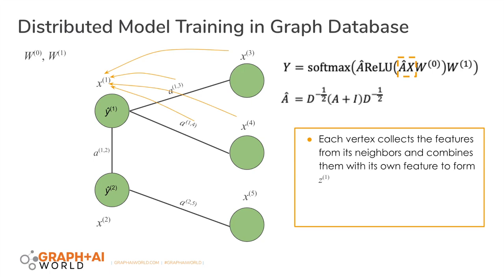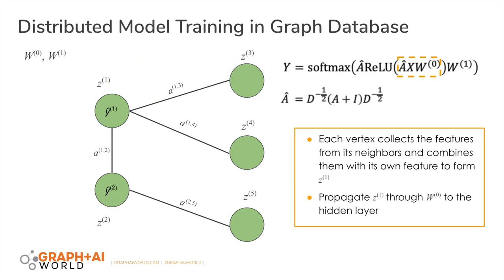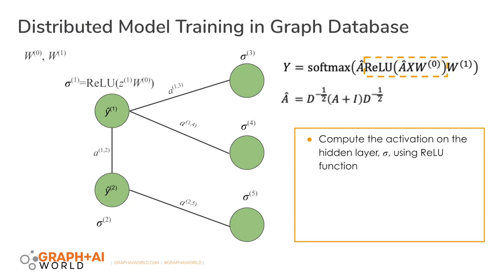This is essentially each vertex sending a message to its neighbors, and there is no dependency between nodes doing this — so these steps can all be done in parallel and distributedly. After each node receives features from its neighbors, we combine them together to do the vertical propagation and gather features on our hidden layer. After we have the feature on the hidden layer, we put that into an activation function — in this case, a ReLU function — to get the activation in the hidden layer.